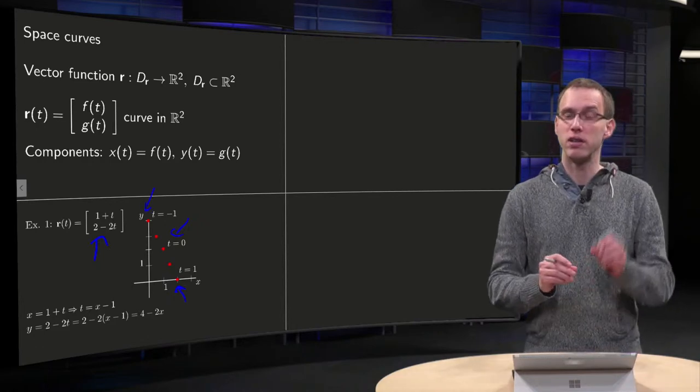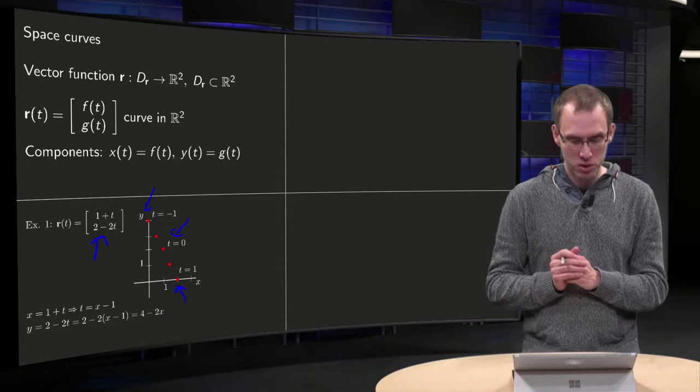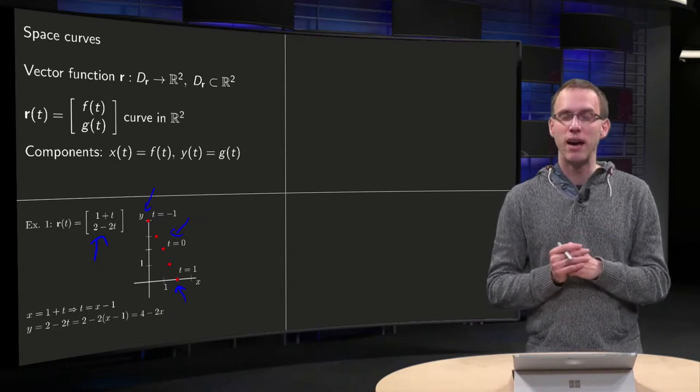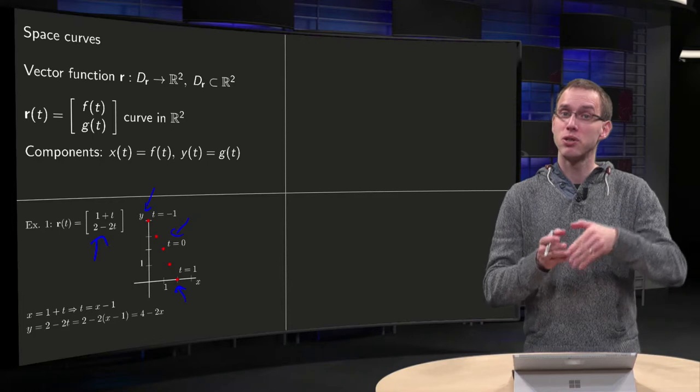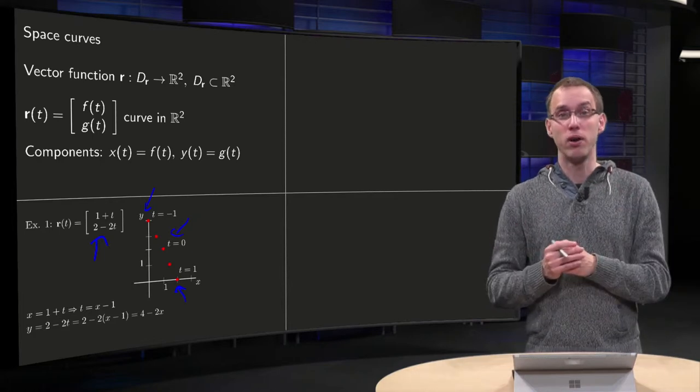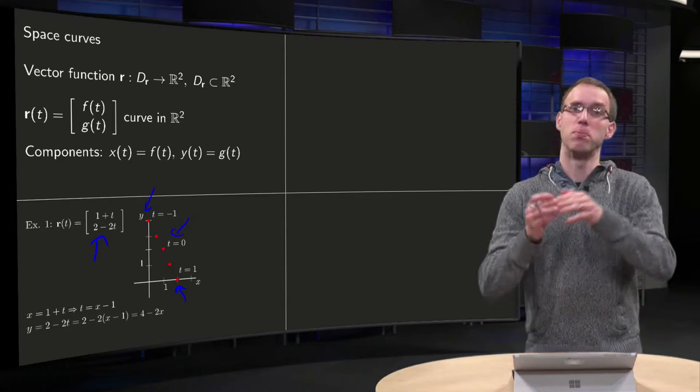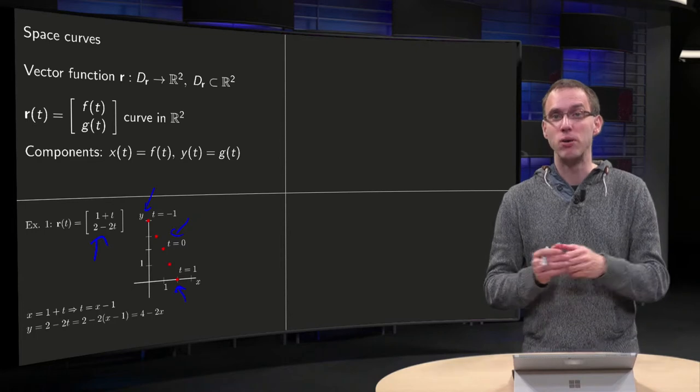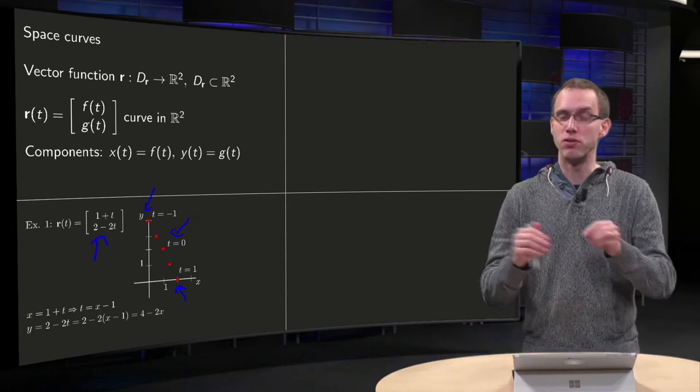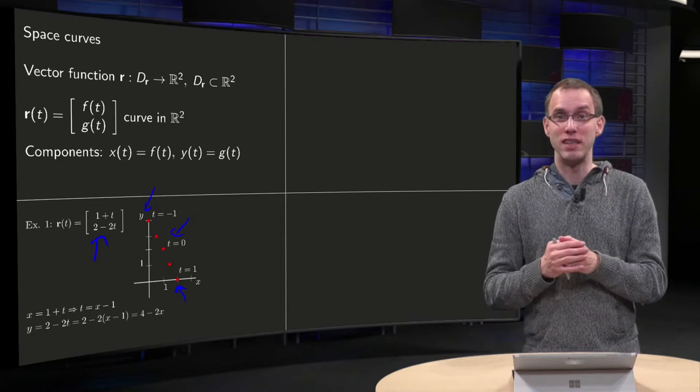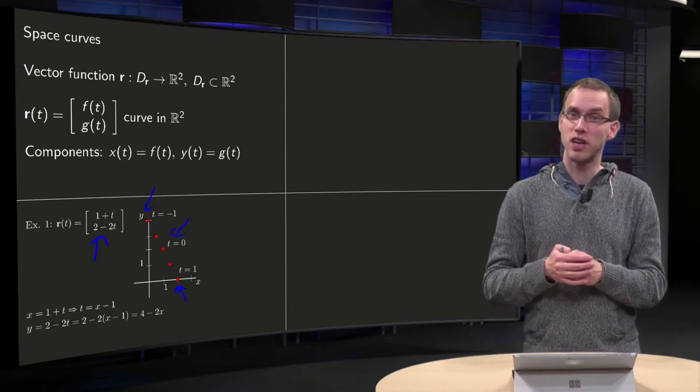And then we can plug in two points in between as well. T equals minus 1 half, T equals 1 half, we get in between. And we say hey, it looks like all those points are on a straight line. We just plug in 5 points here, so maybe if we continue the points, we will end up somewhere else. But as far as we can tell, the points seem to be on a straight line.